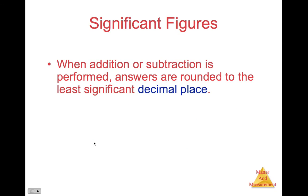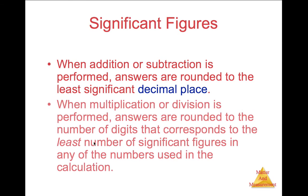When addition or subtraction is performed, answers are rounded to the least significant decimal place. When multiplication or division is performed, answers are rounded to the number of digits that correspond to the least number of significant figures in any of the numbers used in the calculation.